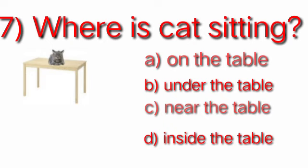Question number 7: Where is the cat sitting? Dear student, in this picture you can see a cat is sitting on the table. Now we can see the options. Which one is correct? Option A: on the table. Option B: under the table. Option C: near the table. Option D: inside the table. Yes, a cat is sitting on the table, so option A is correct. We will put a tick on option A.